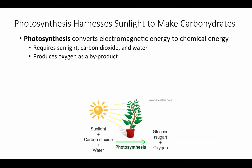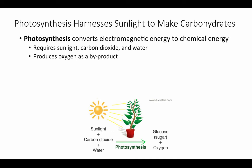The whole point of all of this is to harness sunlight to make carbohydrates. Photosynthesis converts electromagnetic energy to chemical energy and requires sunlight, carbon dioxide, and water. The end products are oxygen as a byproduct and sugars. The overall reaction is: 6 CO2 plus 12 H2O plus energy from the sun yields a molecule of glucose, 6 oxygen, and 6 water molecules.